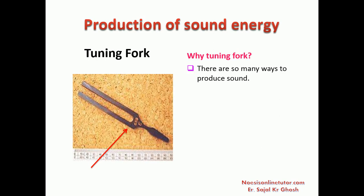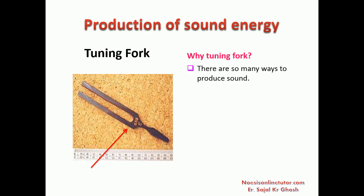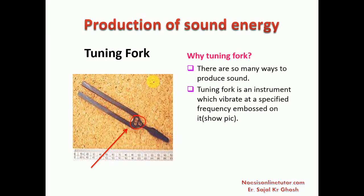A tuning fork is an instrument which vibrates at a specified frequency embossed on it. In this picture it is mentioned as 659, meaning this tuning fork can vibrate and create a sound wave with a frequency of 659 Hertz. Any medium, due to vibration, will produce sound.